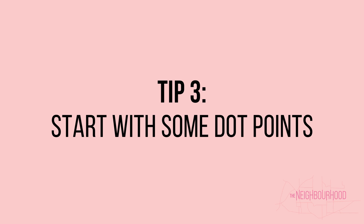Tip number three: start with some dot points. It's a good idea, now that you know what your story is about, to create a thought bubble or some dot points where you can write down all of your memories and thoughts and feelings around the story you're going to tell. That way it becomes really clear to visually see the points you want to include and the details that don't need to be there. It's also really good because now you can start thinking about the structure and moving those dot points around to think about the ordering of your story.